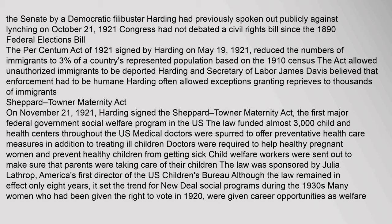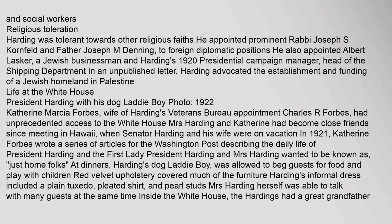Many women who had been given the right to vote in 1920 were given career opportunities as welfare and social workers. Harding was tolerant towards other religious faiths. He appointed prominent Rabbi Joseph S. Kornfeld and Father Joseph M. Denning to foreign diplomatic positions. He also appointed Albert Lasker, a Jewish businessman and Harding's 1920 presidential campaign manager, as head of the shipping department. In an unpublished letter, Harding advocated the establishment and funding of a Jewish homeland in Palestine.